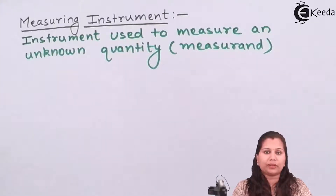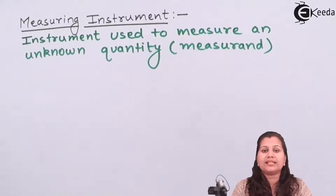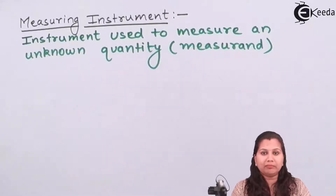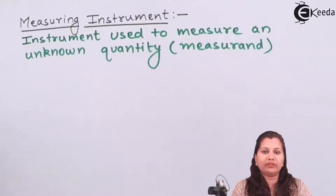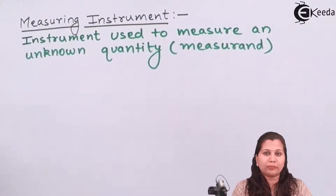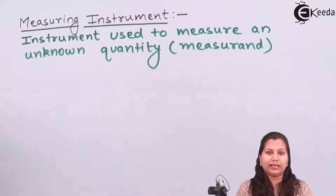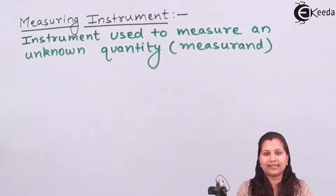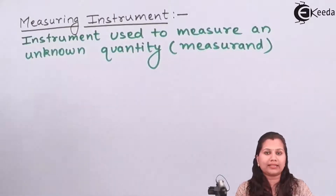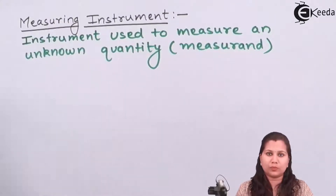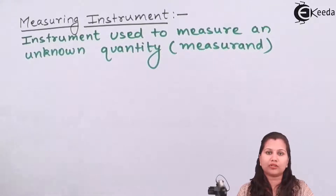These characteristics of the measuring instruments are of two types: static characteristics and dynamic characteristics. Static characteristics, as the word static means constant, are those characteristics which do not vary with time — they remain consistently constant. Dynamic characteristics, as the word dynamic means changing, are those characteristics which change with time. In this video, we are going to study about the dynamic characteristics of the measuring instrument.